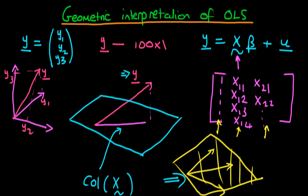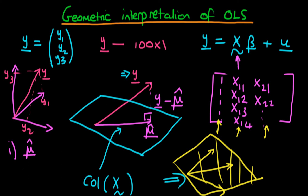We can get as close to y as possible while remaining on the plane. We can represent that orthogonal projection of y onto the plane by a vector which I'm going to call mu hat. Because least squares minimises the squared distance between mu hat and y, we know that these two things are going to be orthogonal — which means that y minus mu hat is going to be orthogonal to the column space of x. So least squares can be thought of as first finding the orthogonal projection of y onto the space spanned by the independent variables, giving us mu hat.